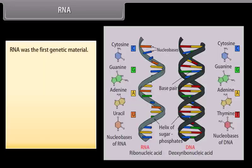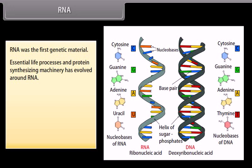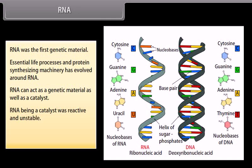RNA was the first genetic material. Essential life processes and the protein synthesizing machinery evolved around RNA. RNA can act as a genetic material as well as a catalyst. However, RNA being a catalyst was reactive and unstable. Thus, DNA evolved as a stable genetic material from RNA.